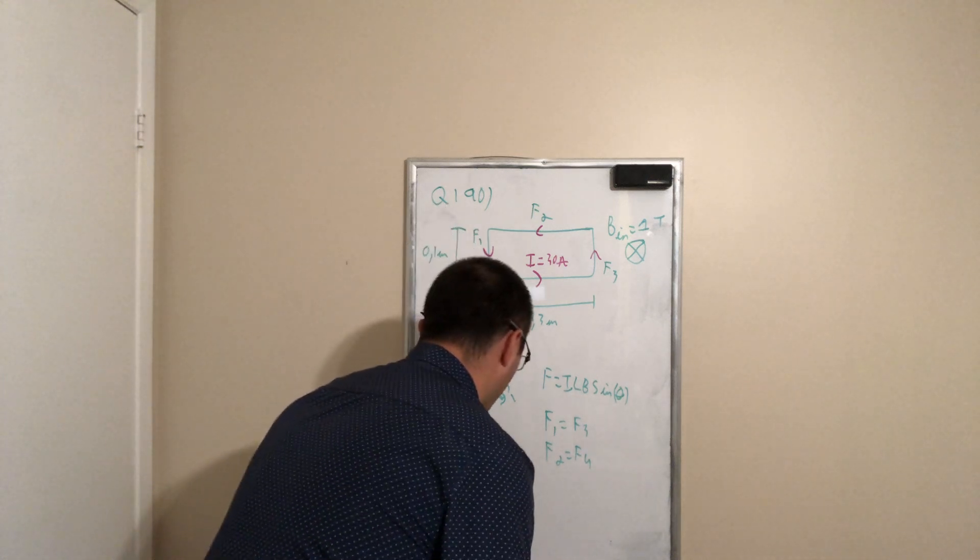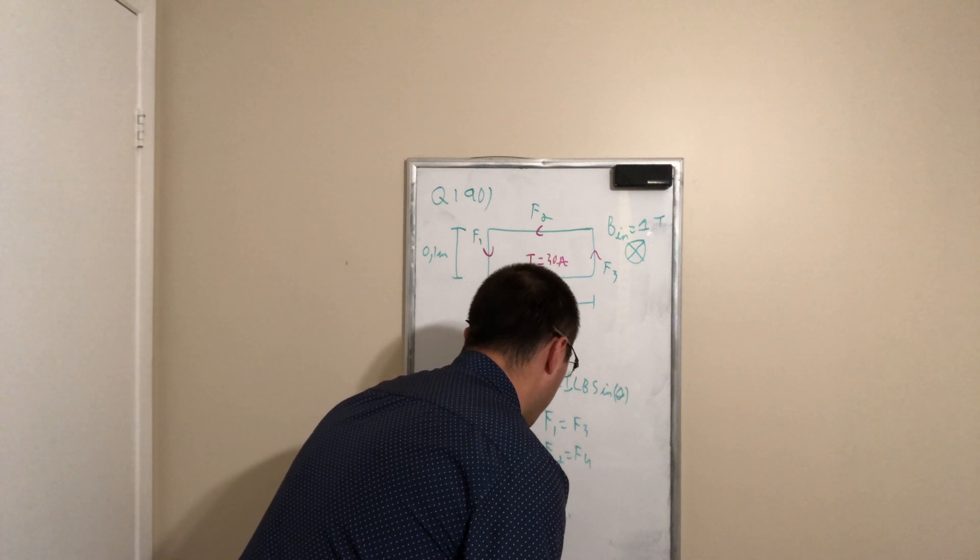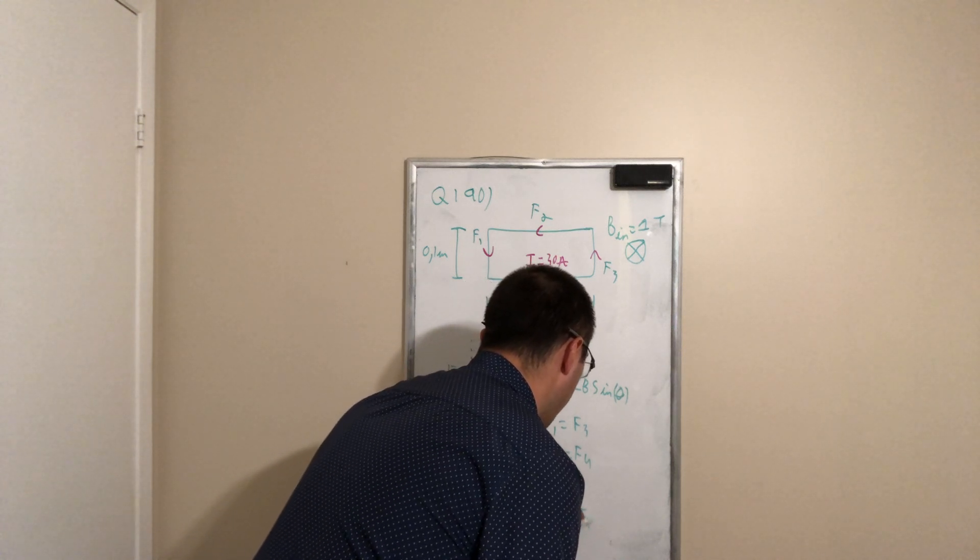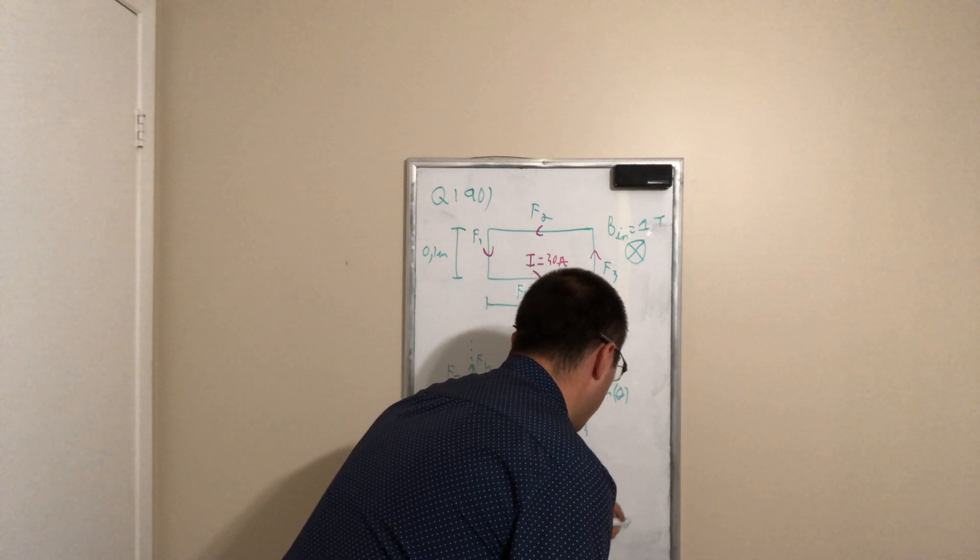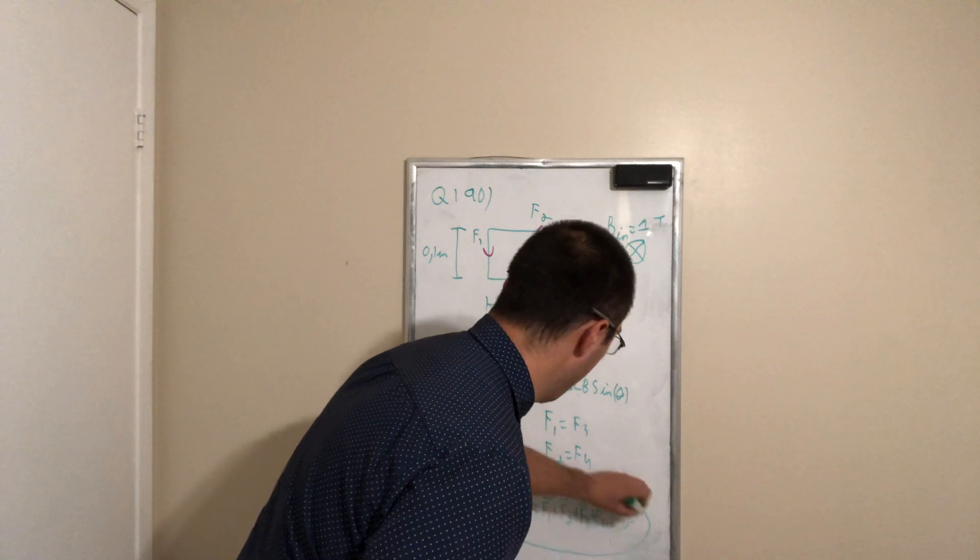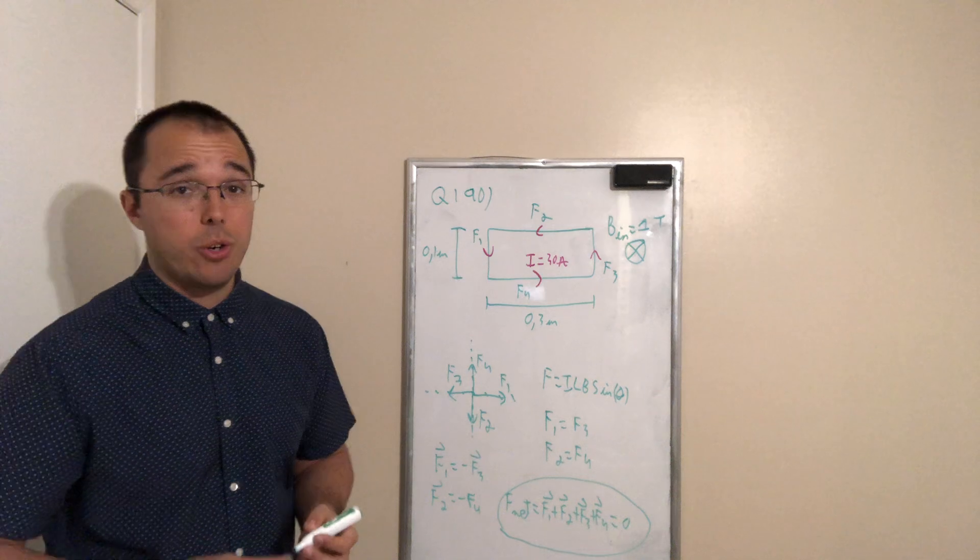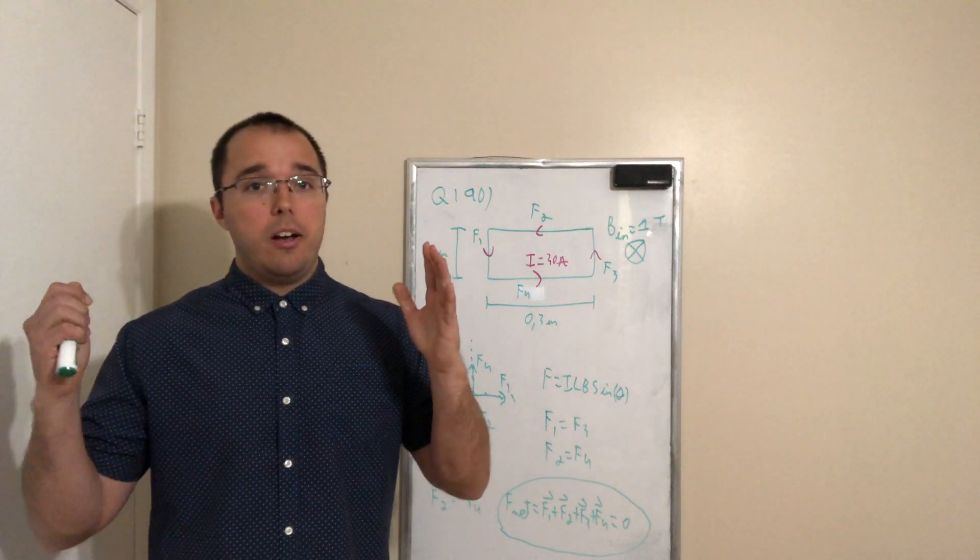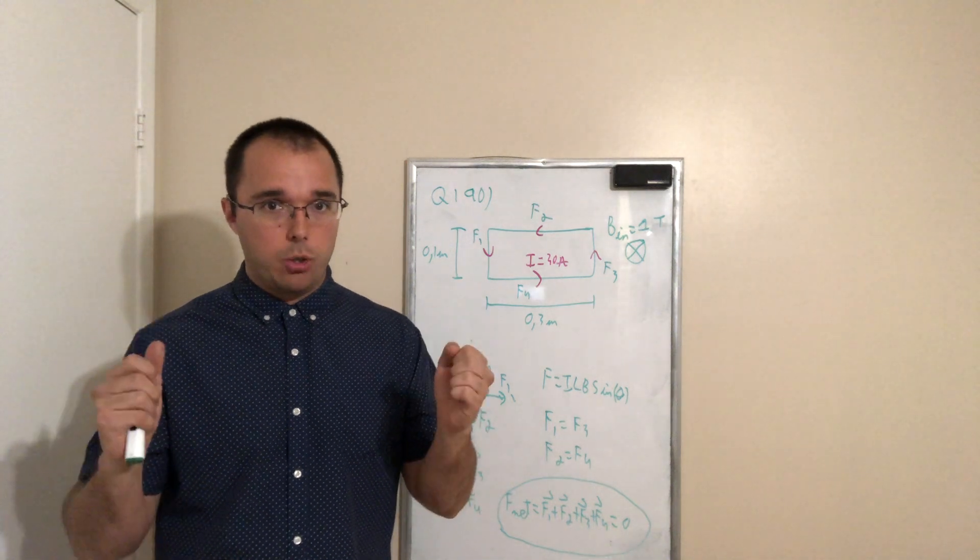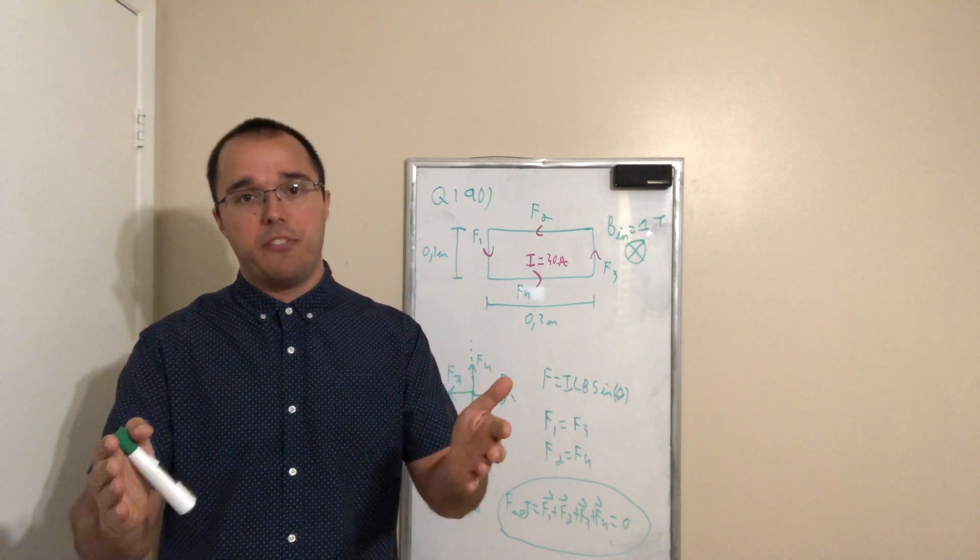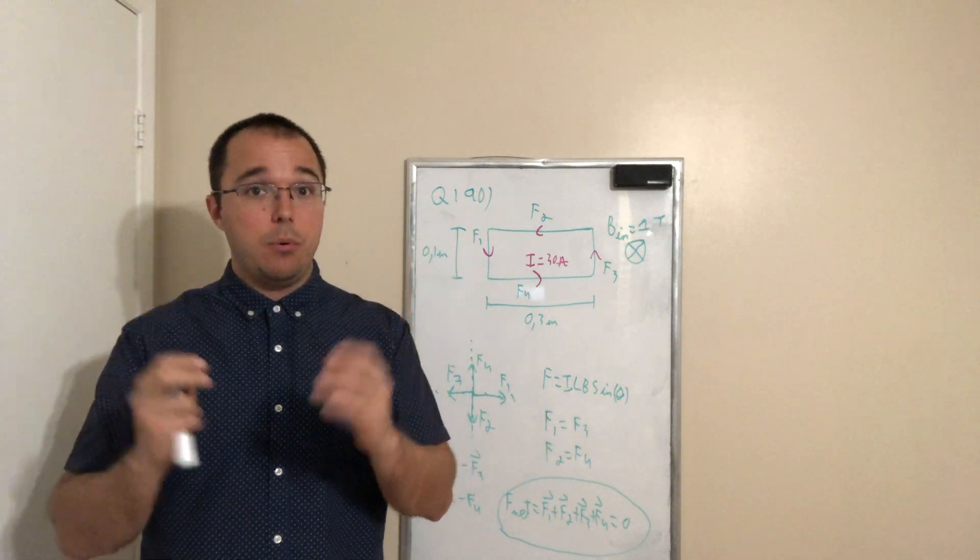So the net force is equal to F1 plus F2 plus F3 plus F4, which equals zero. We don't need to do any calculation here because it's obvious that they all cancel out each other. In fact, if a current carrying wire is in a uniform magnetic field, the net force on the frame is always zero.